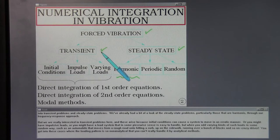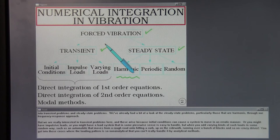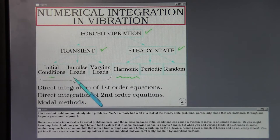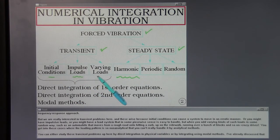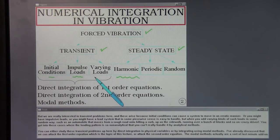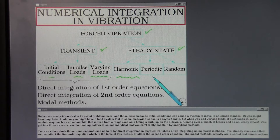We're really interested in transient problems here, and these arise because initial conditions can cause a system to move in an erratic manner, or you might have impulsive loads, or you might have a load system that in some piecewise sense is easy to handle, but when you add varying kinds of such loads in some random way, such as an automobile that moves from a rough road onto hitting a curb up on the sidewalk and running over a bunch of blocks, you get into cases where the loading pattern is so non-analytical that you can't really handle it by analytical methods.